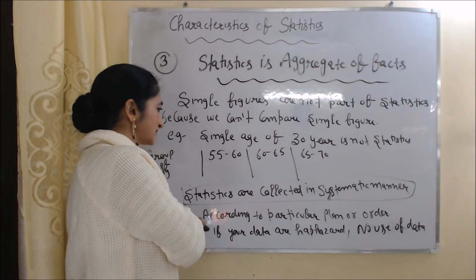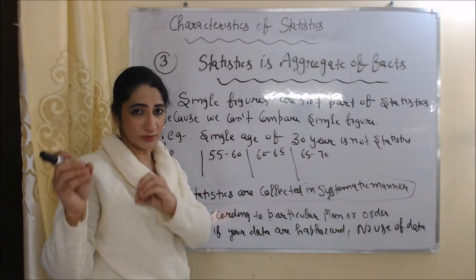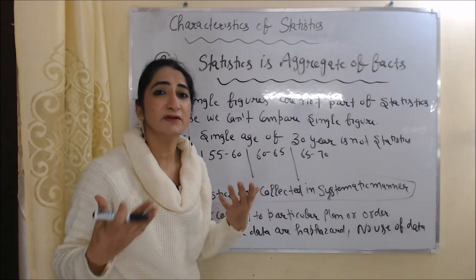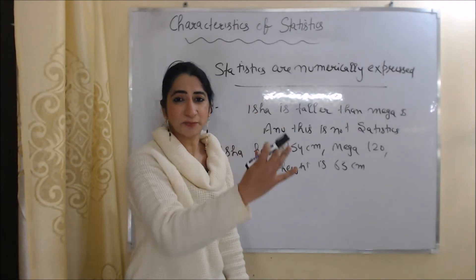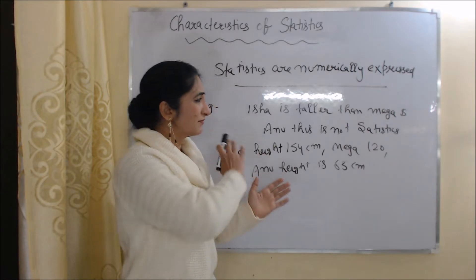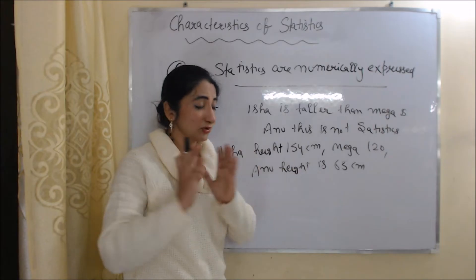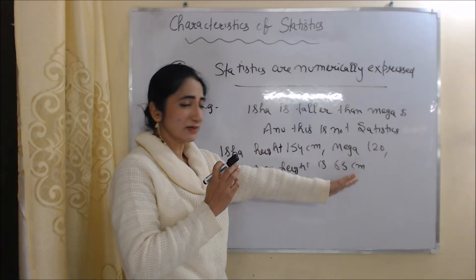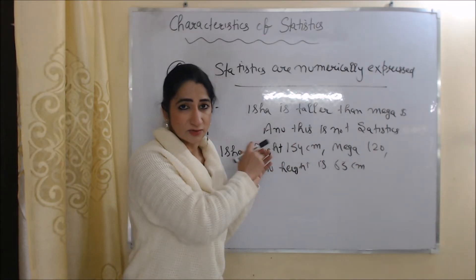The next characteristic is that statistics are collected in a systematic manner — you should collect your data according to a particular plan and order; haphazard data without any plan is of no use. The next characteristic is that statistics are numerically expressed, meaning we should give statistical information with numbers. For example, saying 'Isha is taller than Megha and Anu' is not statistics, but saying Anu's height is 154 cm and Megha's height is 120 cm is called statistics.